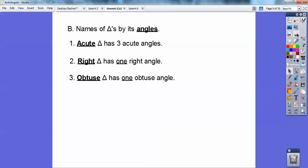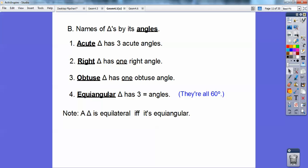An equiangular triangle has three equal angles, and they're all equal to 60, by the way. And note, a triangle's equilateral if and only if it's equiangular. So it's equiangular if and only if it's equilateral. So you'll use that a lot also.